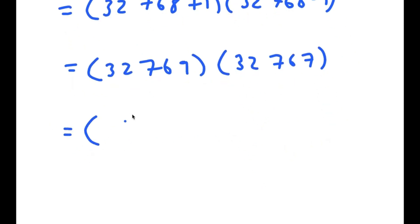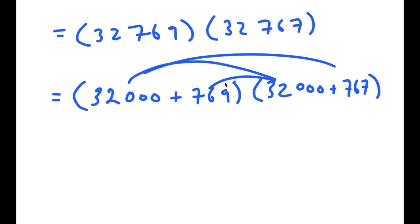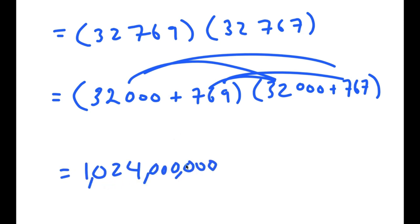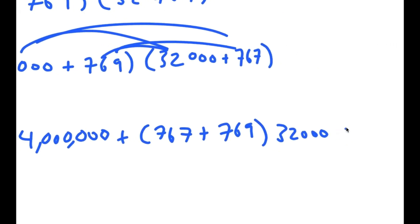Now a simple way to solve this instead of actually multiplying them the regular way is to rewrite this as 32,000 plus 769, times 32,000 plus 767. Now I'm going to distribute. So I get 32,000 times 32,000, which is 1,024,000,000. And now I have plus 32,000 times 767, plus 769, plus 32,000 times 769. And finally at the end I have 767 times 769.